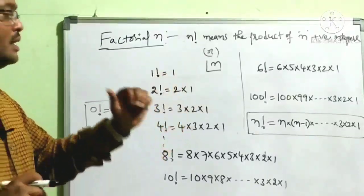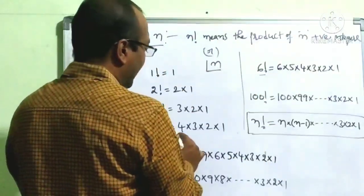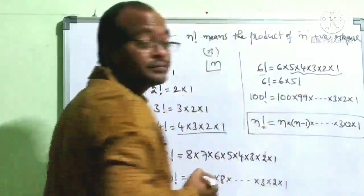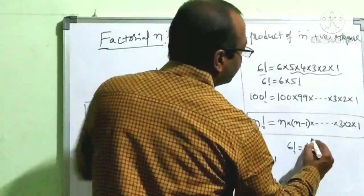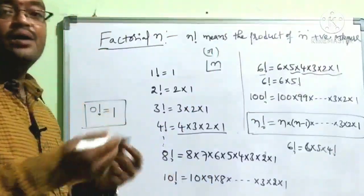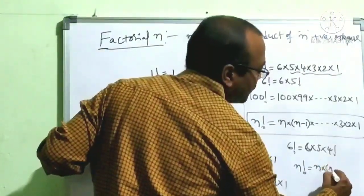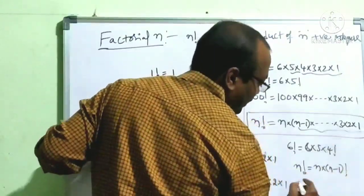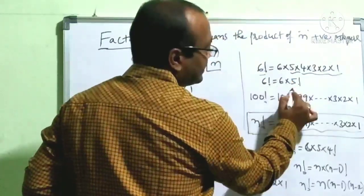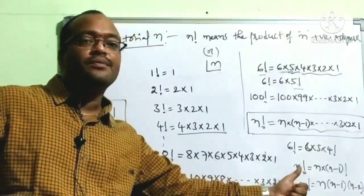Now, regarding factorial notation properties: is 6 factorial equal to 6 × 5 factorial? Yes. So n factorial equals n × (n−1) factorial. Also, n factorial equals n × (n−1) × (n−2) factorial. For example, 6 factorial equals 6 × 5 factorial.